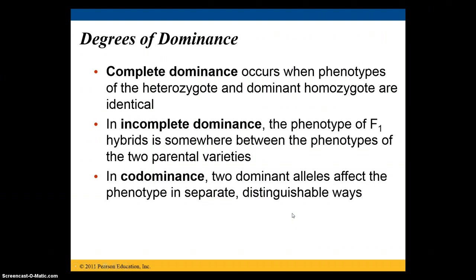Complete dominance is when the phenotypes of the heterozygote and the dominant homozygote are identical — this is the dominant-recessive pattern of inheritance. Incomplete dominance is where the phenotype of the F1 hybrids is somewhere between the phenotypes of the two parental varieties — for example, crossing a red flower and a white flower to get a pink flower. In codominance, two dominant alleles both affect the phenotype in two separate, distinguishable ways, so both traits are present.